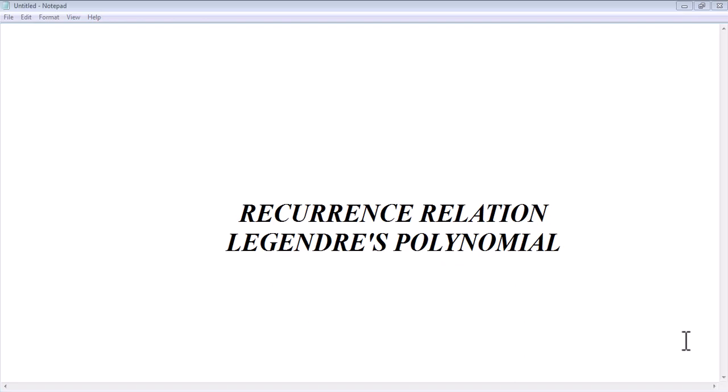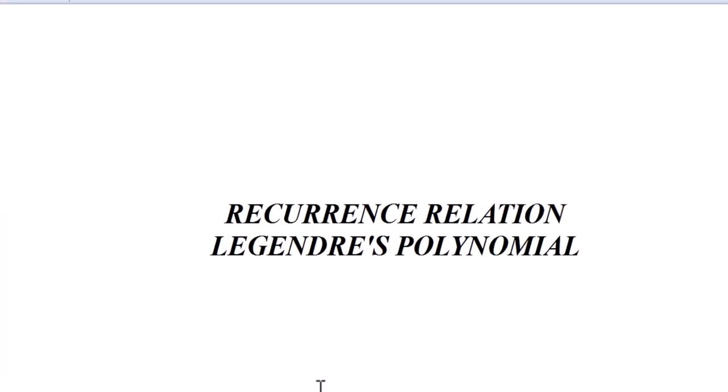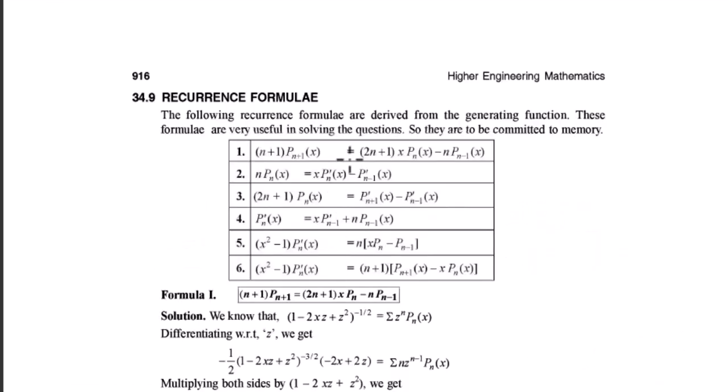Hello everyone. Today we are going to discuss the recurrence relations of the Legendre polynomials. Recurrence relations are basically relations using Legendre polynomials, and they repeat themselves — or they are satisfied — for different orders of the Legendre polynomials. As we can see, the Legendre polynomials will have six different types of recurrence relations.